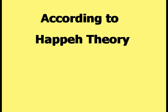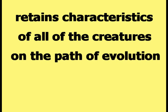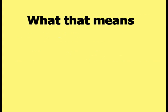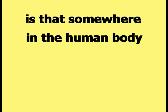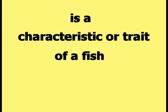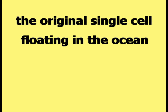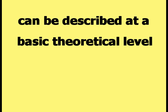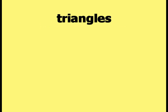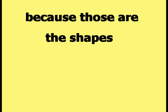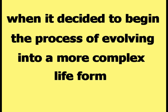According to Happy Theory, the present-day human body retains characteristics of all of the creatures on the path of evolution. That means somewhere in the human body is a characteristic or trait of a fish, an amphibian, a reptile, a bird, an insect, a mammal, and most pertinent to this video, the original single cell floating in the ocean. The construction of the human body can be described using spheres, circles, spirals, triangles, and pyramids because those are the shapes that were available to the single cell when it decided to begin the process of evolving into a more complex life form.